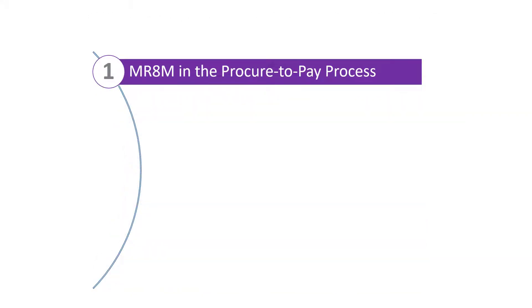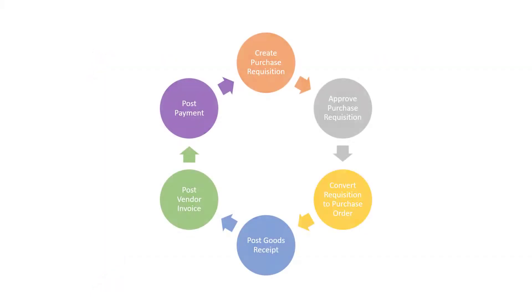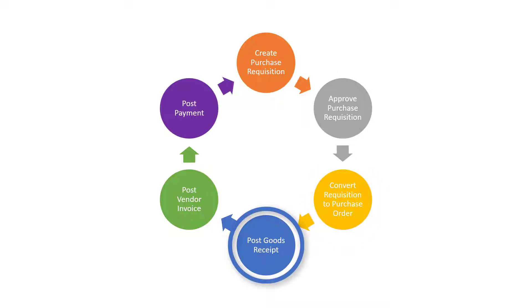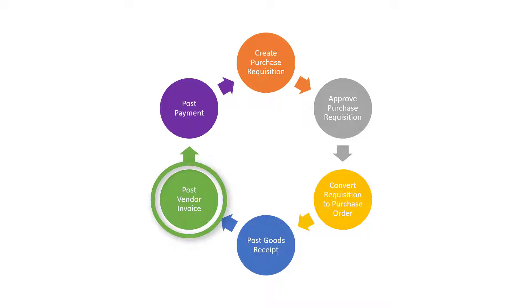Let's begin with where transaction MR8M fits in the Procure2Pay process. Transaction MR8M is used to cancel PO invoices and credit memos — that is, invoices and credit memos posted against a purchase order. Consequently, the procurement steps in the Procure2Pay process — Create Purchase Requisition, Approve Purchase Requisition, Convert Purchase Requisition to Purchase Order, and Post Goods Receipt — should have already been completed, as is the case in this example. Transaction MR8M sits within the Post Vendor Invoice step and is completed by the Accounts Payable Department.